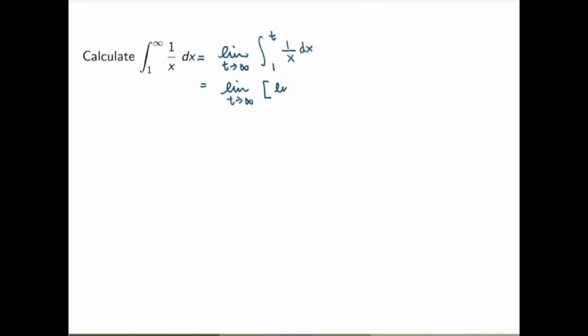The integral of 1 over x is just ln of x, evaluated between 1 and t. This is the limit as t goes to infinity of ln of t minus ln of 1. But ln of 1 is just zero, so I end up with the limit as t goes to infinity of ln of t, and this is just infinite. So in this case the improper integral diverges. In the previous case it converged because we got 1, but here it diverges because the limit does not exist — it's infinite.